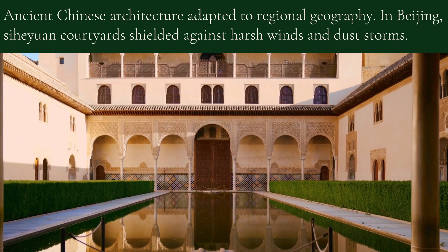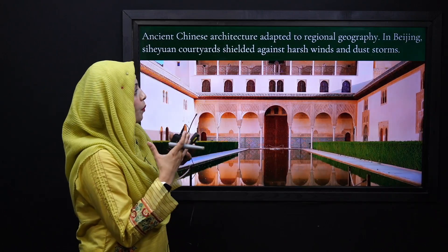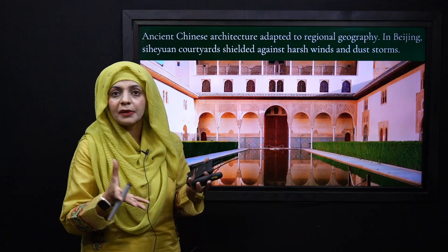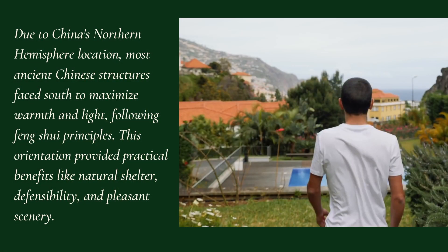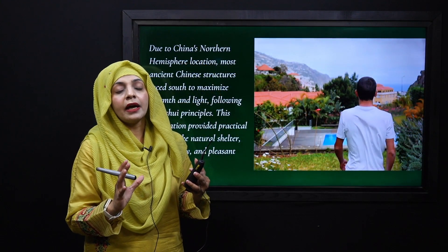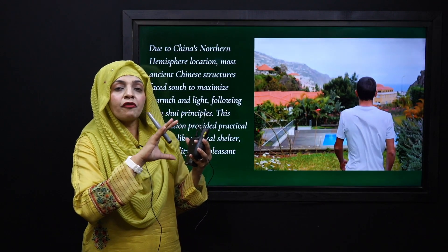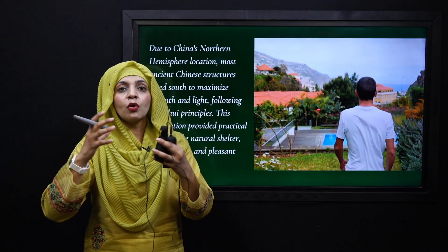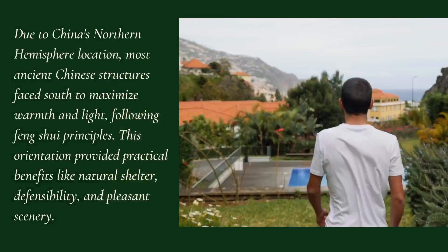The Chinese buildings were also made of wood. For example, in Beijing, the courts were made to withstand harsh winds and dust storms, and they were built with wood for protection. All the buildings in northern China are made of wood, and because the north is colder, the buildings were faced towards the south. Any buildings or houses were oriented on the southern side so that they could receive maximum warmth and enjoy the scenery. This principle is called the Feng Shui principle.